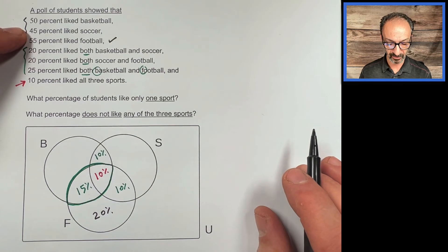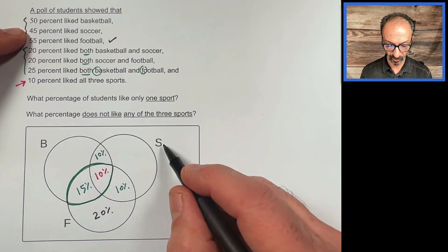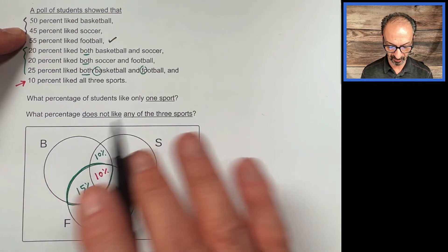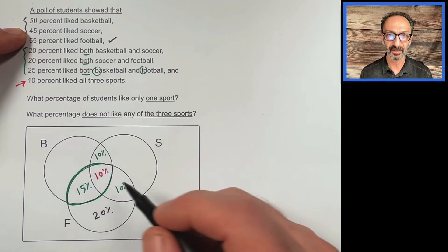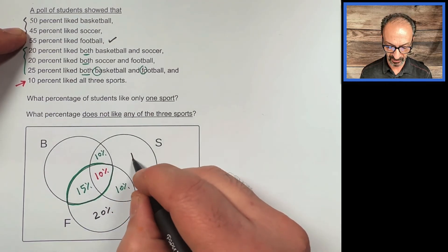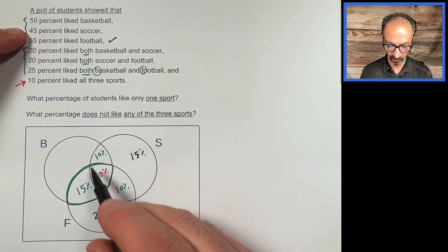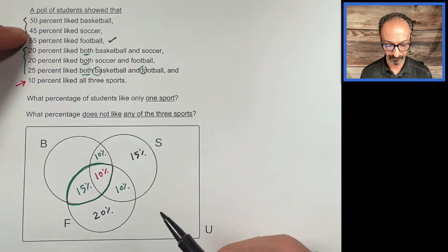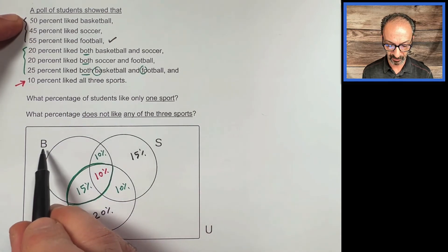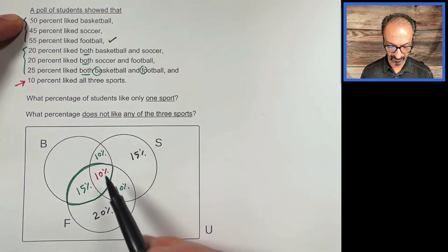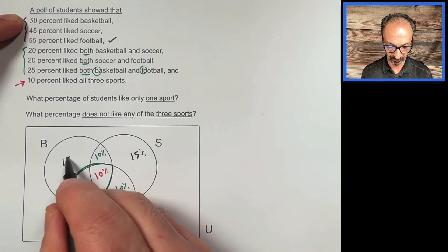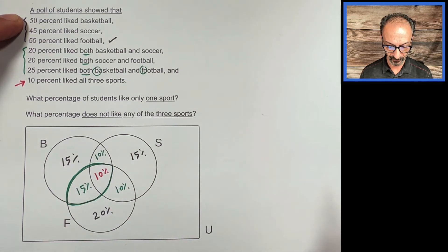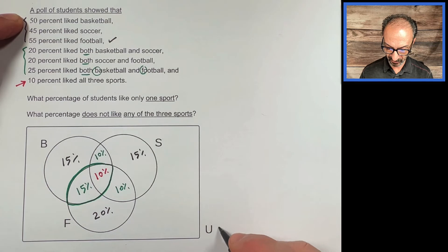45% liked soccer. Inside the soccer circle we already have 10, 10, and 10 — that's 30 taken — so 15% goes in the soccer-only region. 50% liked basketball. Inside the basketball circle we already have 10, 10, and 15 — that's 35 taken — so 15% goes in the basketball-only region.